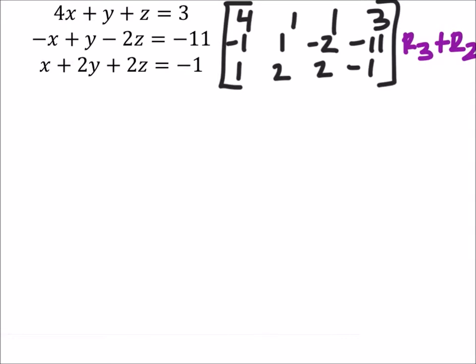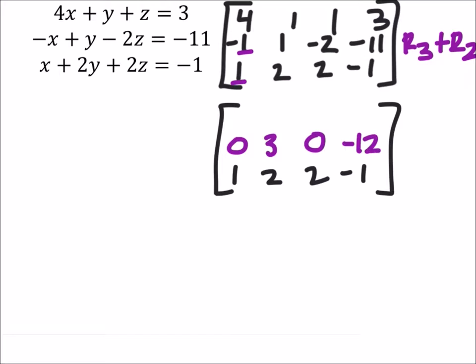But not only that, because we can do this, I'm going to do it separately. So I'm going to keep my bottom row the same, 1, 2, 2, negative 1. So if I take row 3 and add it to row 2, I get 0, 3, 0, and negative 12. That's pretty convenient, because we eliminated the z in that equation as well.